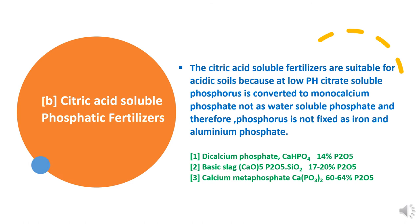The next category of Phosphatic fertilizer is citric acid soluble Phosphatic fertilizer. This fertilizer is suitable for acid soils. At low soil pH, citric soluble Phosphorus is converted to mono calcium phosphate, which is not a water soluble phosphate. So Phosphorus does not get fixed as iron and aluminum phosphate, and it remains available to the plants.